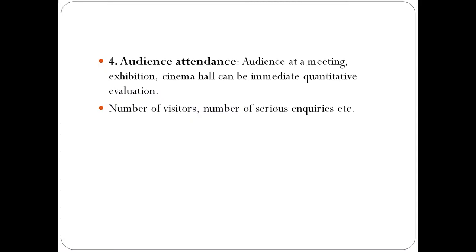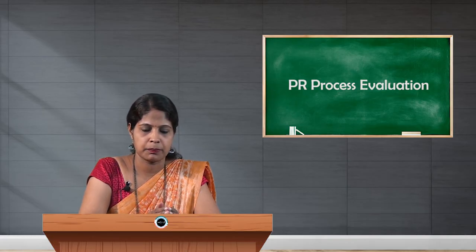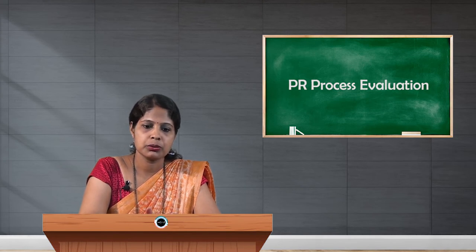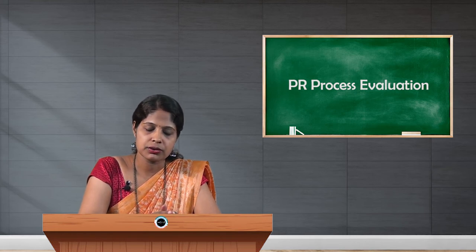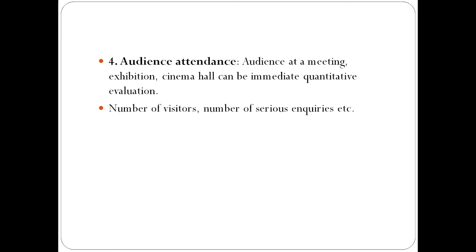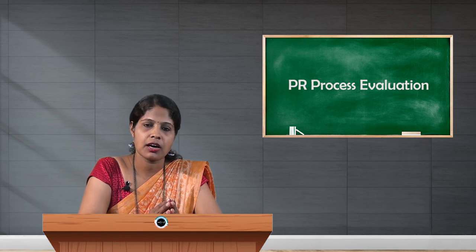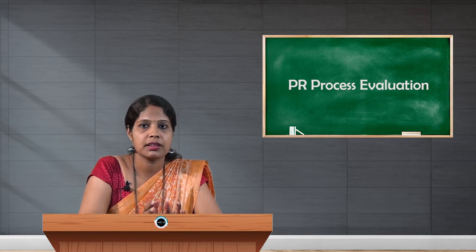The fourth method is audience attendance. It is considered a very quantitative and immediate evaluation process of a public relation program. If you plan to conduct a meeting to persuade people to have a positive opinion towards the organization, you evaluate by finding out the number of audience at the meeting. Or if your plan is to conduct an exhibition, the immediate evaluation is to look at how many people attended or visited your exhibition stall. Similarly, for a cinema, immediate evaluation is how many people watched or visited your theater. It is considered an immediate quantitative evaluation method.